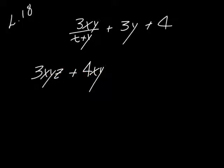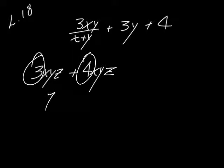If they gave you a problem like that and said simplify, you would say it's already simplified — I can't do anything. But if this had a Z on it, now they're like terms. All you do with like terms is add or subtract, depending on the sign, the number, and then put the variables on there. You don't do anything to the variables.